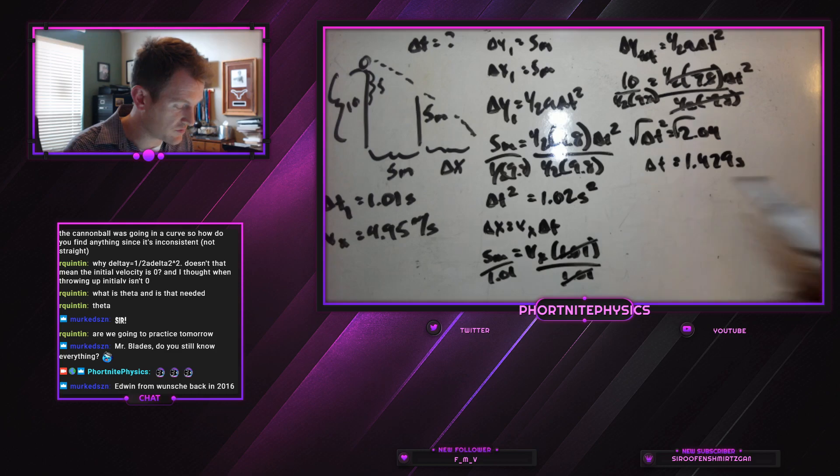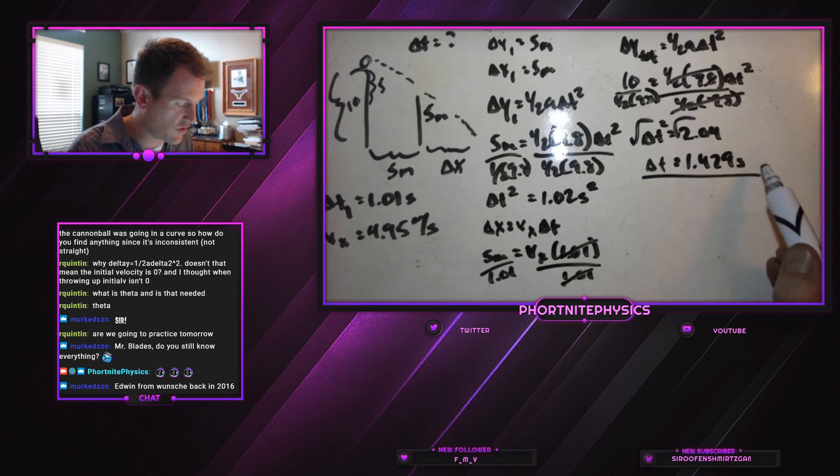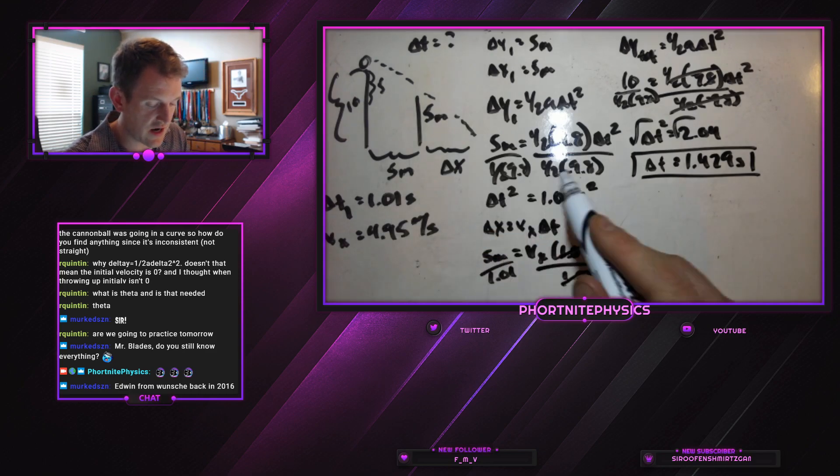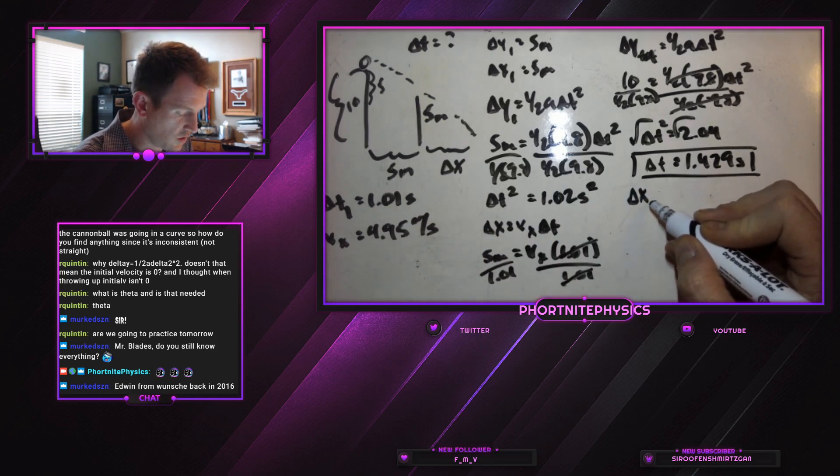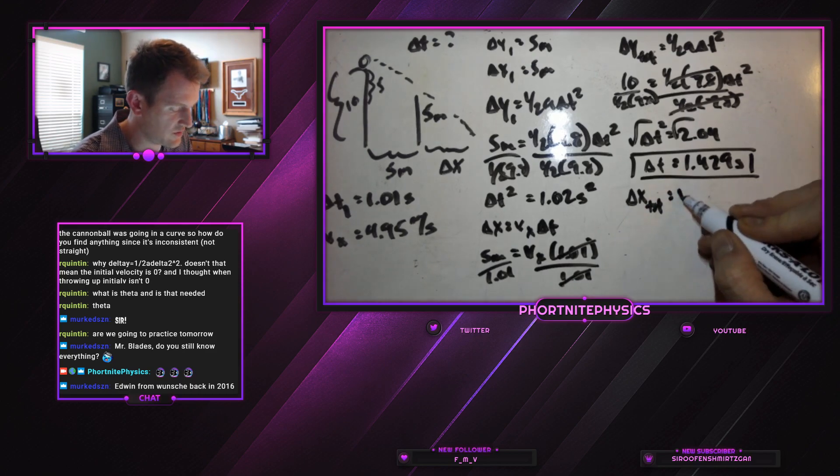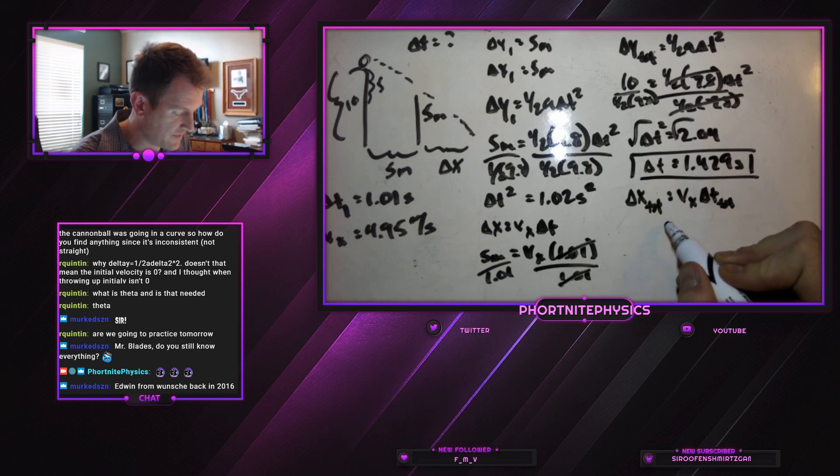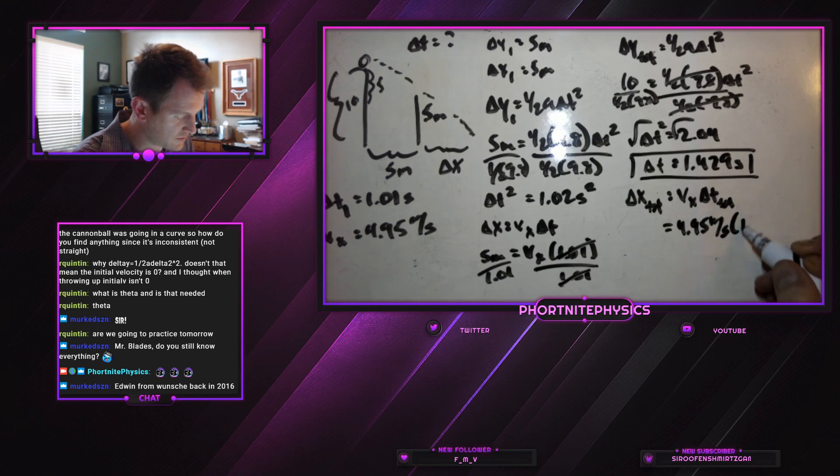That's how long the ball falls. Remember, we actually calculated this in class, if you're in one of my L classes, that a 10 meter fall takes 1.429 seconds. And using that now, we can calculate our total delta X. Our total delta X is equal to our VX multiplied by our total time, which is 4.95 meters per second multiplied by 1.429 seconds.